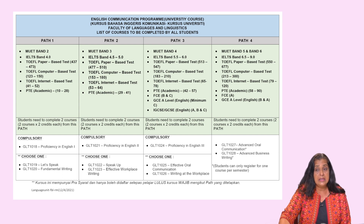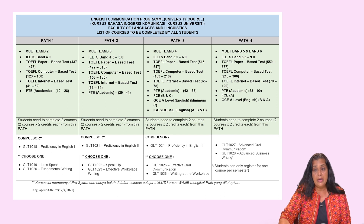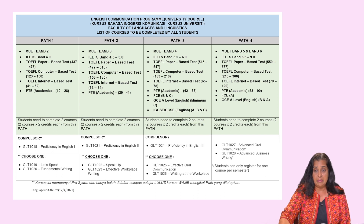This process is the same for all the paths except PATH 4, which is for students with MUED bands 5 and 6. There is no prerequisite under this path and you have to complete both the courses. However, you can only do one course in a semester.